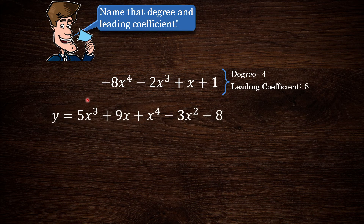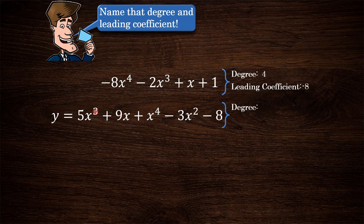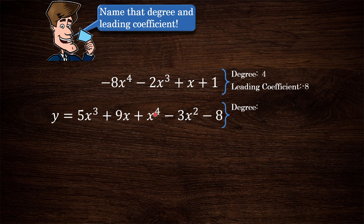Now we have a polynomial function — notice we have y equals a polynomial expression. What is the degree for this one? Well, be careful. We're getting used to looking at the first term and assuming it has the highest power of x, and it usually is. But notice that if we scan through here, we have another term that actually has a higher exponent on x. That is the highest exponent — this 4 here. So our degree is actually 4. And for that x to the 4 term, our coefficient is 1 — we didn't write it, but we have a 1 there. So the leading coefficient is just 1.